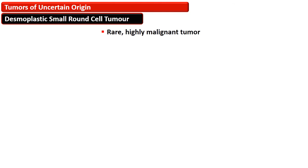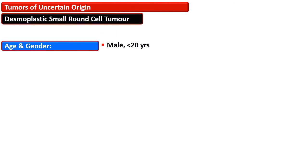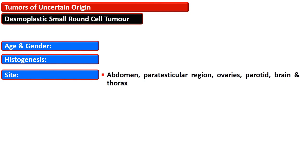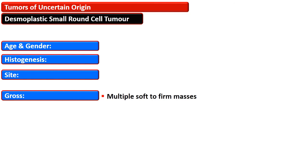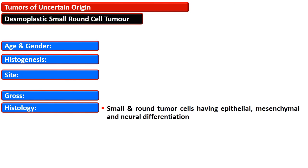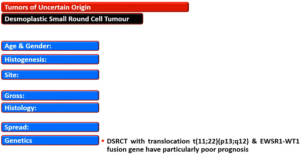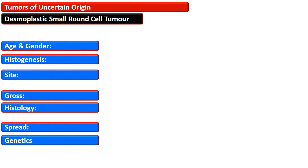Desmoplastic small round cell tumor is another member of tumors of uncertain origin. It is a rare and highly malignant tumor affecting males under the age of 20 years, with unclear histogenesis. Common sites are the abdomen, paratesticular region, ovaries, parotids, brain, and thorax. Grossly they are multiple soft to firm masses, and histologically composed of small round cells having epithelial, mesenchymal, and neural differentiation. They spread rapidly to regional lymph nodes and other sites. The desmoplastic small round cell tumor has translocation t(11;22) and EWSR1-WT1 fusion gene, which carries a particularly poor prognosis.